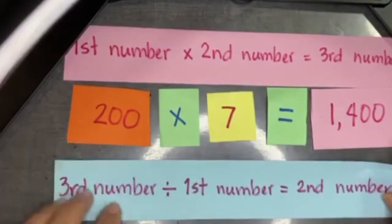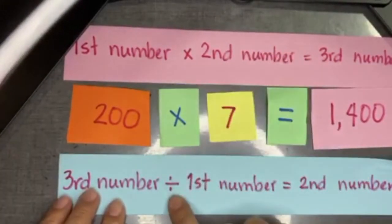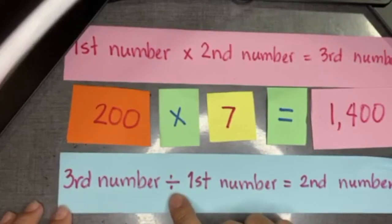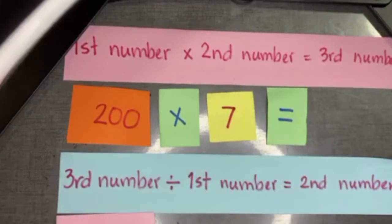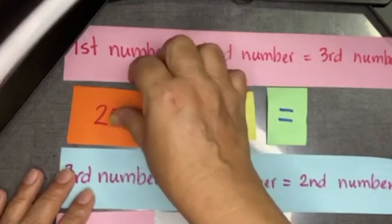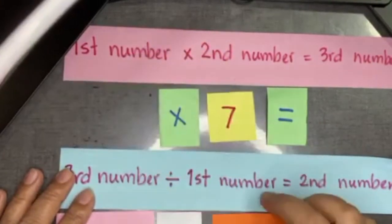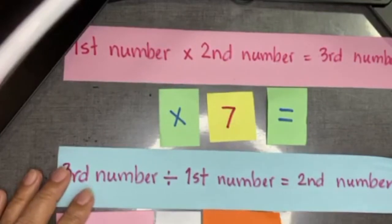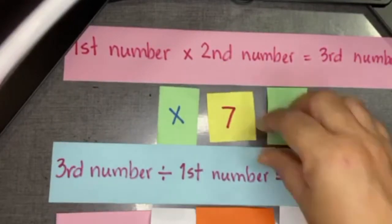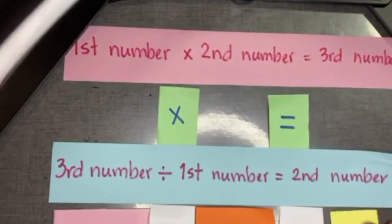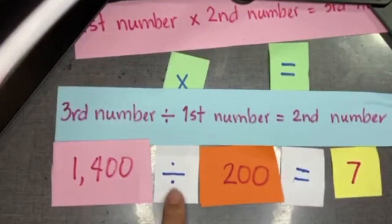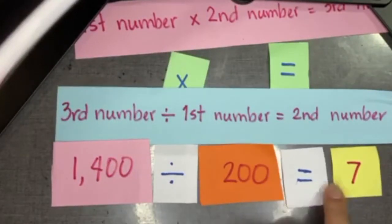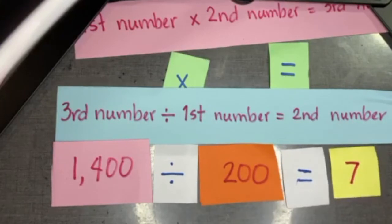Now let us apply this relationship. This is multiplication; this is division. The third number, one thousand four hundred, divided by the first number, two hundred, equals the second number, seven. So one thousand four hundred divided by two hundred equals seven. That's the relationship between multiplication and division to find the quotient.